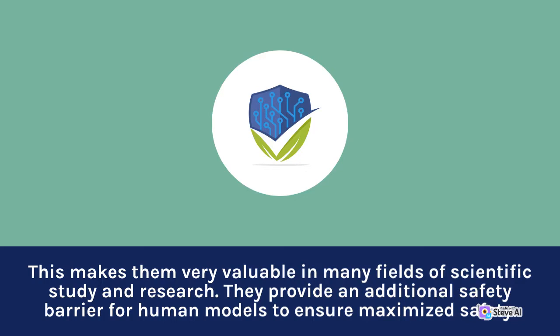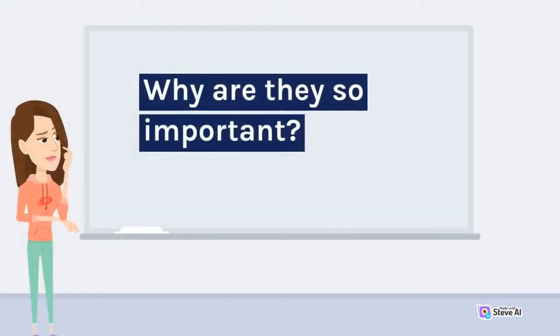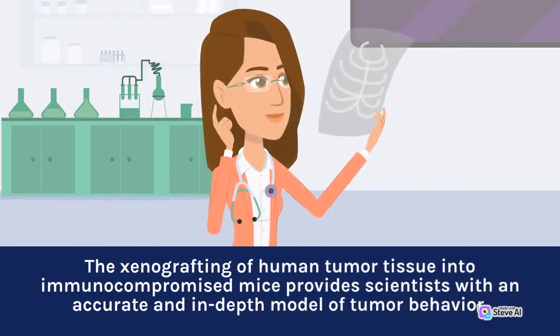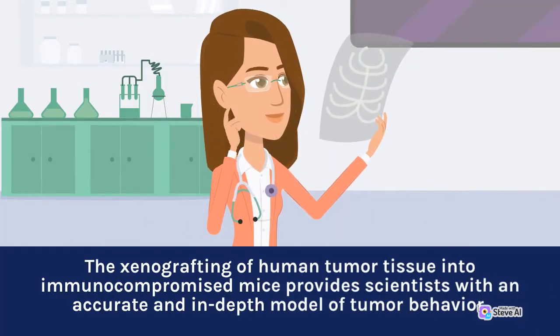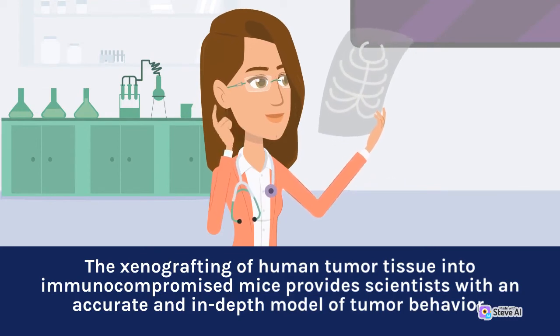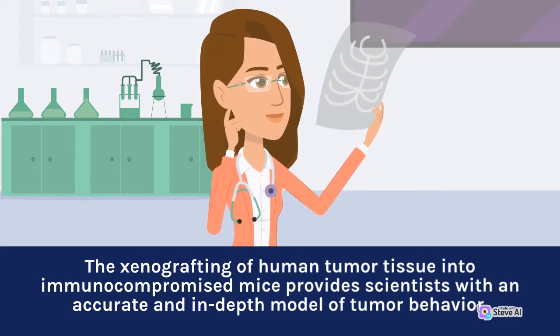They provide an additional safety barrier for human models to ensure maximized safety. Why are they so important? The xenografting of human tumor tissue into immunocompromised mice provides scientists with an accurate and in-depth model of tumor behavior.